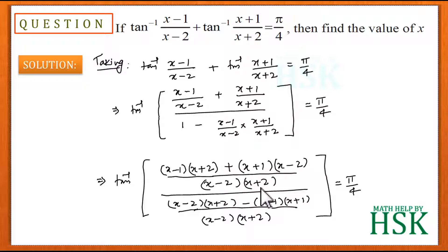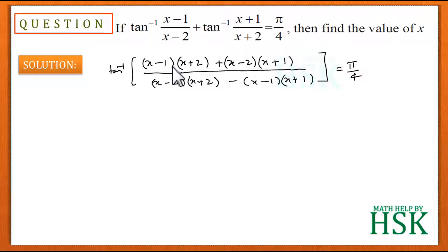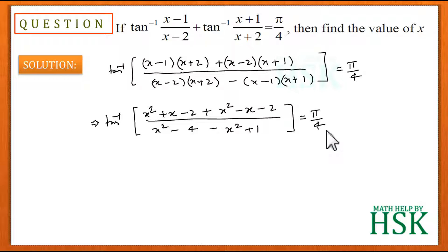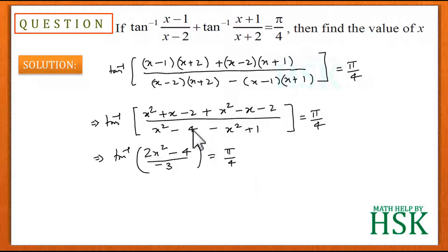The common factor (x-2)(x+2) cancels from numerator and denominator. Opening the brackets: the numerator gives x²+x-2 + x²-x-2, and the denominator gives x²-4 minus (x²-1), which becomes -x²+1. The x terms cancel, giving numerator 2x²-4.